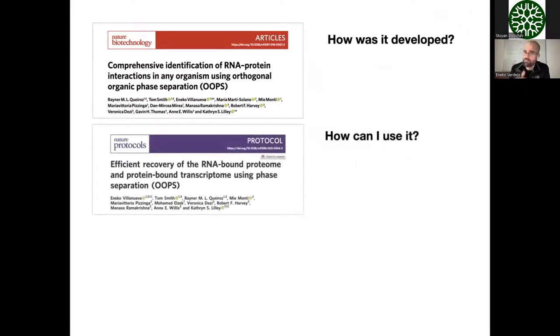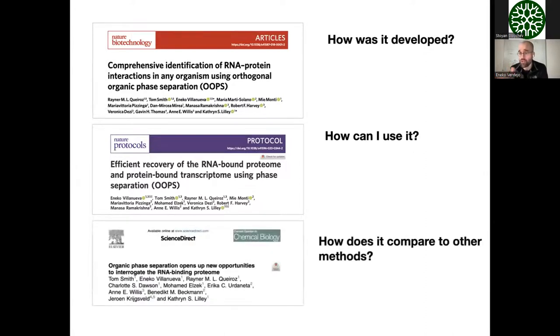OOPS was published in 2019, just before the pandemic. The paper has well over 150 citations from groups around the world using it to identify RNA-binding proteins in different systems. In order to address many questions from beta testers, we developed a step-by-step protocol — if you are ever interested in applying OOPS in your system, I highly encourage you to check that publication. We also wrote a joint review with authors developing similar phase-separation methods, explaining the weaknesses and strengths of all of them.